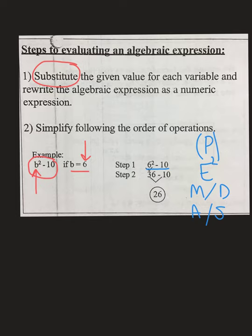So, we don't have any parentheses, so we can skip that. Exponent comes before multiplication, division, addition, or subtraction, which means 6 squared needs to happen first. 6 times 6 gets us 36. Bring down our minus 10, and then 36 minus 10 gets us our answer of 26. And we're done.